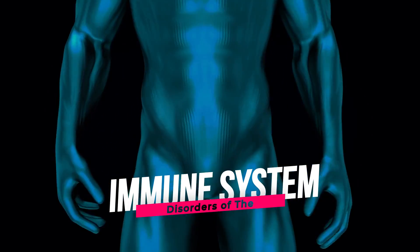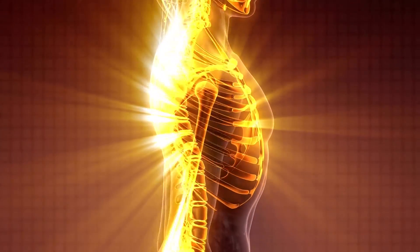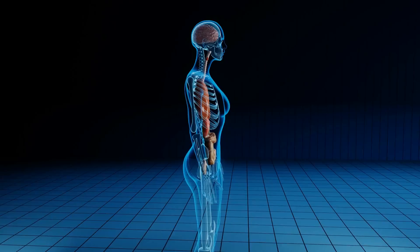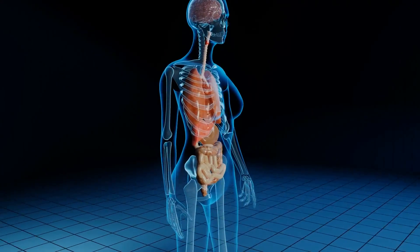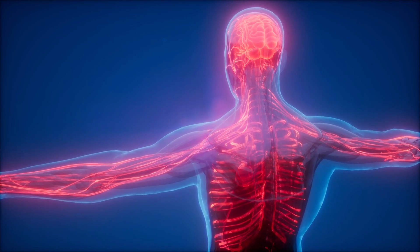Disorders of the immune system. While the immune system is designed to protect the body from harm, it can also malfunction and cause harm itself. Broadly, there are three ways that the immune system could malfunction. It could overreact, make mistakes, or get weak.